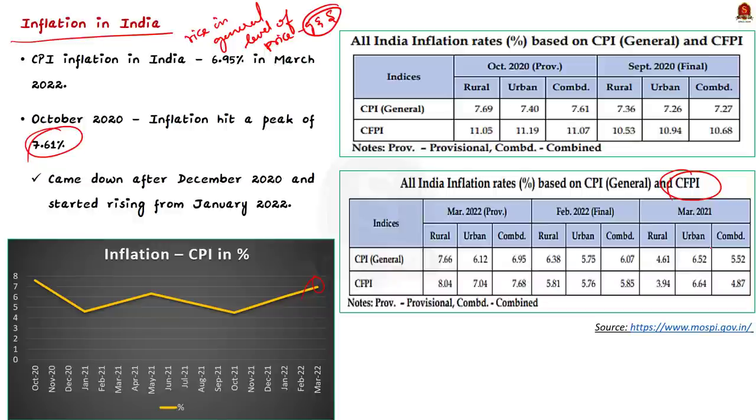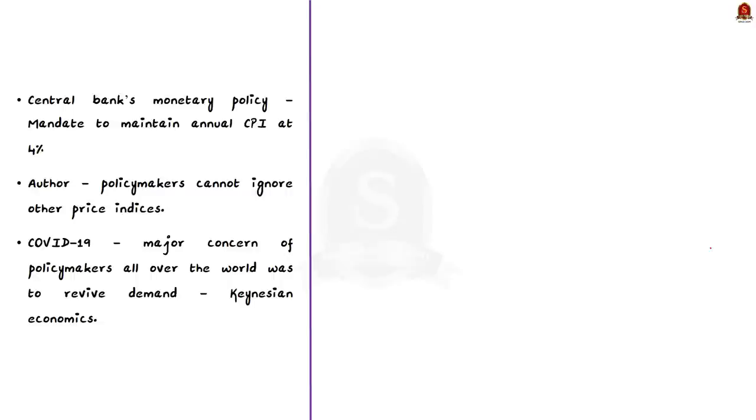Central government, along with RBI, has a monetary policy which mandates to maintain an annual CPI. And this is called as inflation targeting. Here, the CPI is to be maintained at 4 percentage. And this has a tolerance limit of plus or minus 2 percentage. That is, CPI could be between 2 percentage to 6 percentage. And as we can see, for March 2022, it is way above 6 percentage. So, it is above the targeted range. And this is the reason why RBI raised the repo rate to tackle inflation.